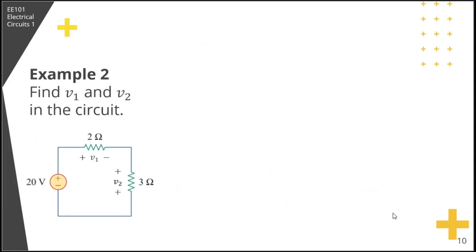Another example. Find V1 and V2 in this circuit. So V1, this is a voltage divider.